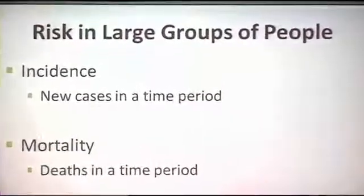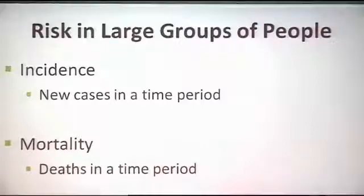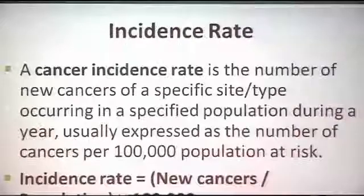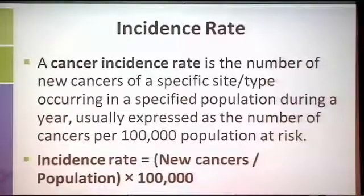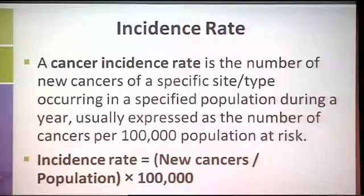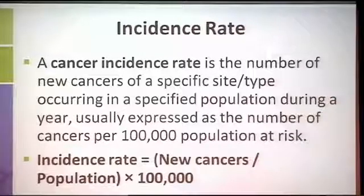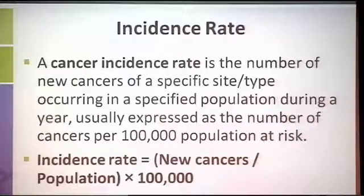Going over incidence: new cases in a time period, and mortality: deaths in a time period. The incidence rate is the number of new cancers of a specific type in a population — it could be the city of New York, the state of New York, the U.S., or the world. It's usually expressed as a number of cancers per 100,000, calculated by dividing the number of new cancers by the size of the population. For example, in New York City, if you have 1,000 cases, you divide that by the population of roughly 8 million and then multiply by 100,000.